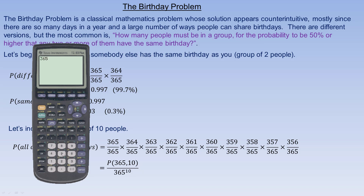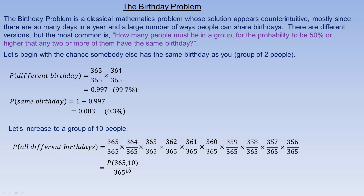Note that with the permutation formula, you go 365 minus however many you're permuting, and add one, to get the last number in the product. So if you evaluate this, you get 0.833. The probability that there are people with the same birthday would be 1 minus that, or about 0.117, which is almost 12%. So in just a group of 10 people, the probability that there are people with the same birthday — which could be 3, 4, 5, or more — is up to about 11.7%.